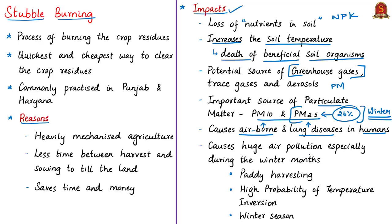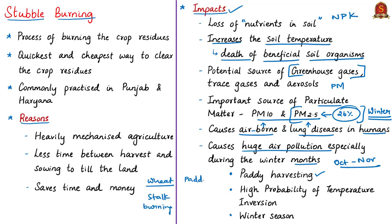There is strong scientific evidence of deterioration in air quality in Delhi in October and November, and the main reason is stubble burning by farmers in Punjab and Haryana. When farmers harvest wheat, they burn only the stock — the remaining crop residue is used as cattle food. But for paddy harvesting in October and November, farmers burn both paddy stock and paddy straw.